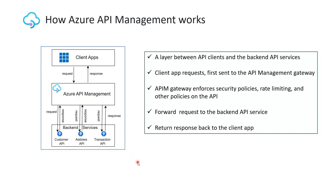Azure API Management works by providing a layer between API clients and the backend API services. When a client makes a request, it is first sent to the API Management gateway. The gateway is responsible for enforcing security policies, rate limiting, and other policies. If the request is allowed, it is forwarded to the backend API service, which processes the request and sends a response back through the gateway to the client.